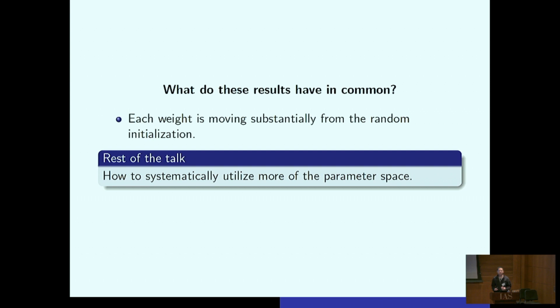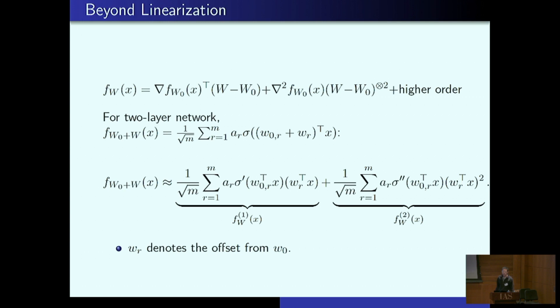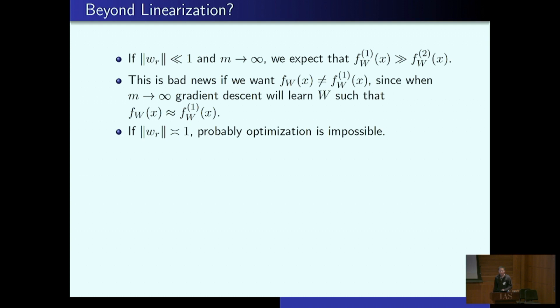So the only thing I'll use ever is Taylor series. I take my neural net and I simply expand to higher order. So we have two terms now. I have the linear term f1, which is exactly what NTK is, and f2, which is a quadratic term. And there's some higher order terms I'll talk about at the end of the talk. But for the next 20 minutes, let's pretend we only have these first two terms. And wr is the offset from w0, it's not the parameter itself, it's how much you moved from w0.